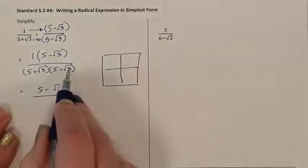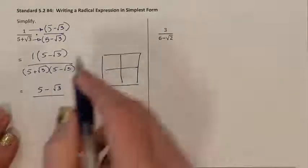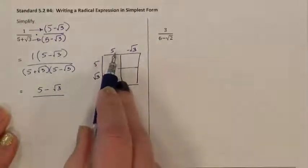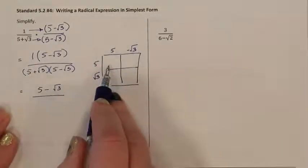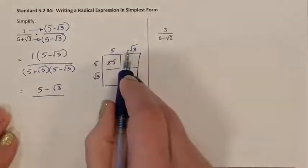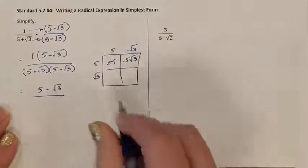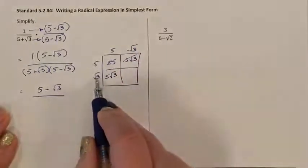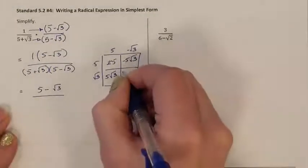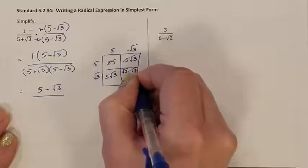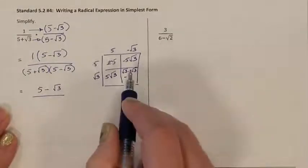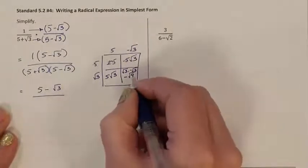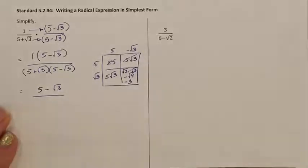So 5 plus the square root of 3 and 5 minus the square root of 3 — here is my multiplied binomial. 5 times 5 is 25. 5 times negative root 3 is negative 5 root 3. 5 times root 3 is 5 root 3. Root 3 times negative root 3: positive times negative is negative, and root 3 times root 3 is root 9. Square root of 9 is 3, so this ends up being negative 3.